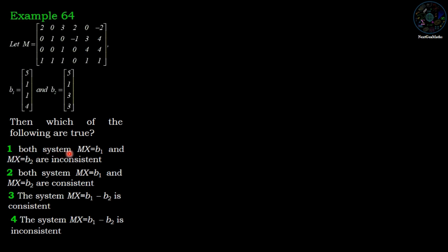First option: both the systems MX equals B1 and MX equals B2 are inconsistent. Second: both systems MX equals B1 and MX equals B2 are consistent. Third: the system MX equals B1 minus B2 is consistent. Fourth: the system MX equals B1 minus B2 is inconsistent.